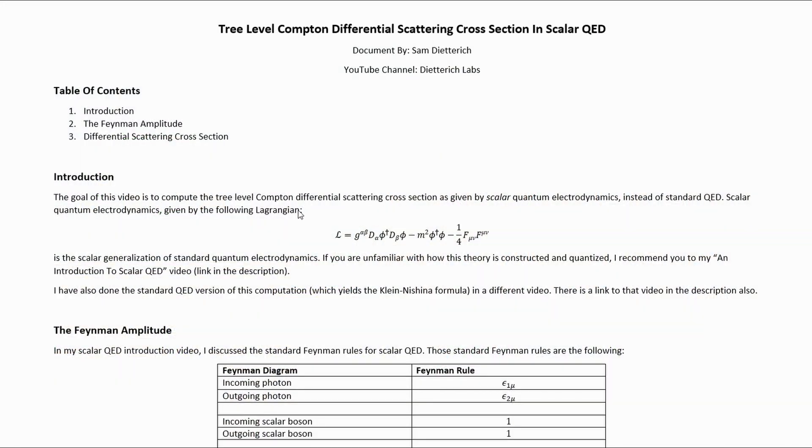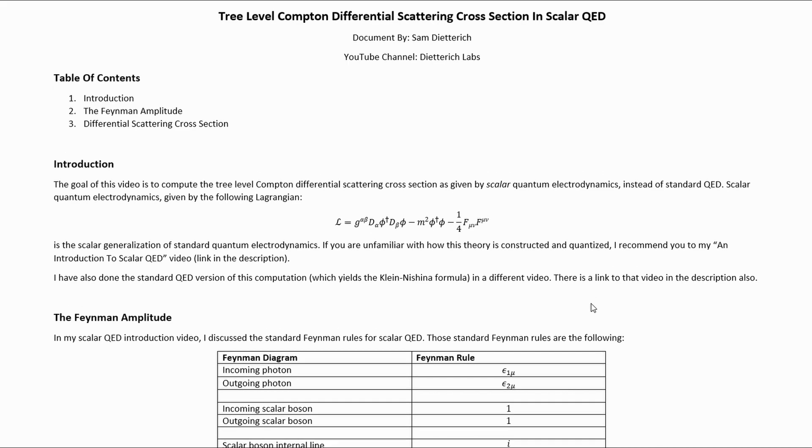The goal of this video is to compute the tree-level Compton differential scattering cross-section as given by scalar quantum electrodynamics instead of standard QED. Scalar quantum electrodynamics given by this Lagrangian is the scalar generalization of standard quantum electrodynamics. If you are unfamiliar with how this theory is constructed and quantized, I recommend you to my An Introduction to Scalar QED video. I have also done a standard QED version of this computation that yields the Klein-Nishina formula as the result.